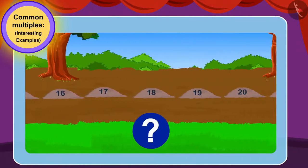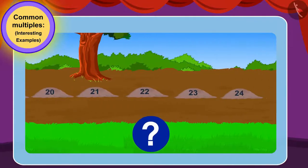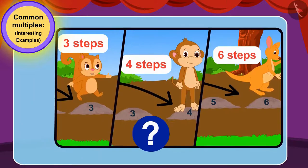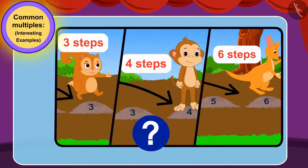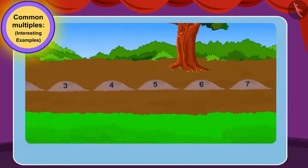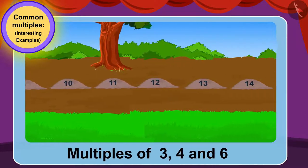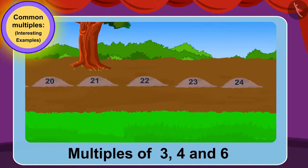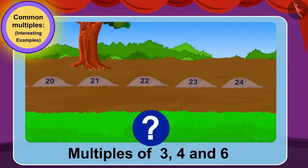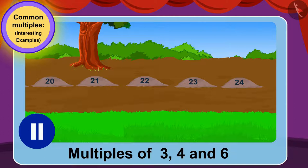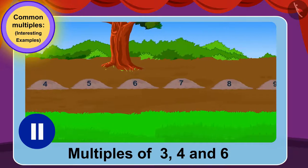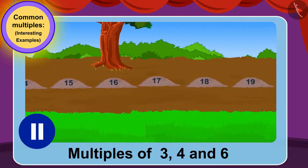We have to first find out which stones the three friends will jump on. What will we do to find this, children? Exactly! We will find multiples of three, four, and six up to twenty-four. Can you figure it out? You can stop the video and find the answer. Well done, children — you have found the right answer.